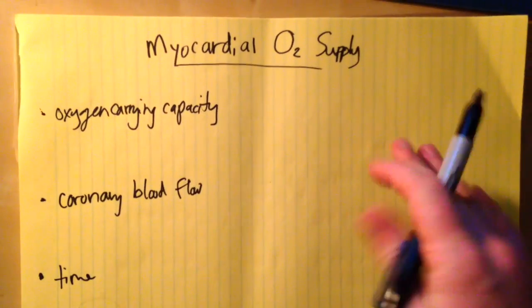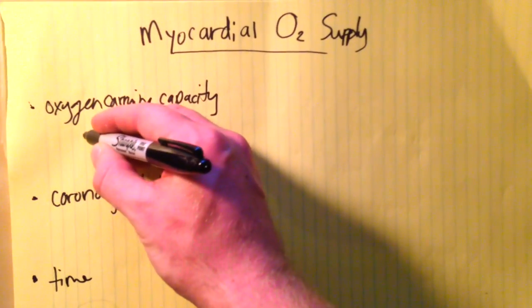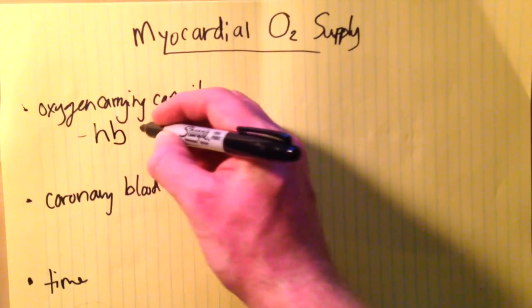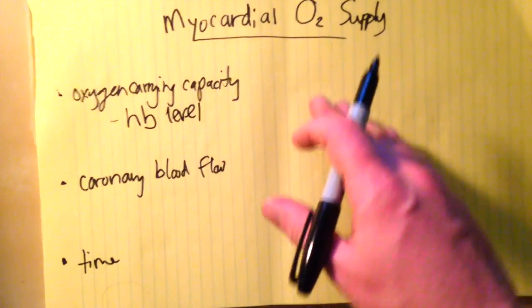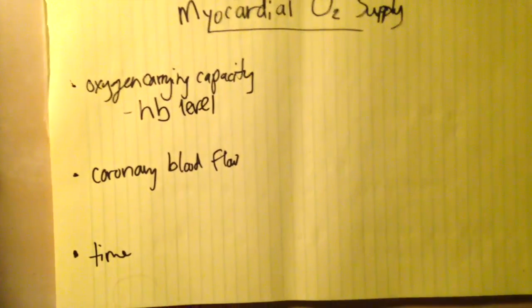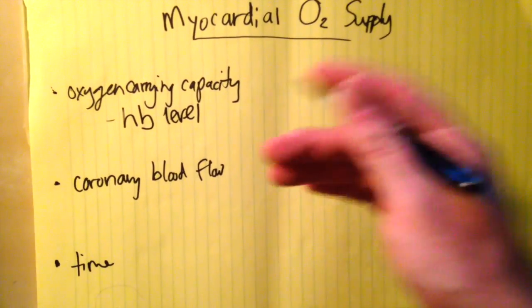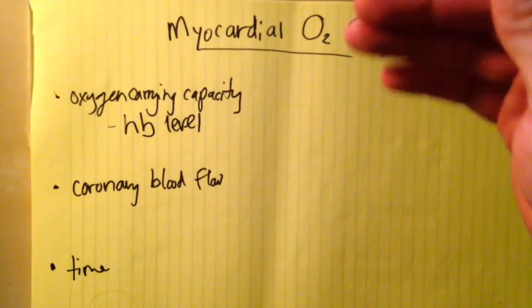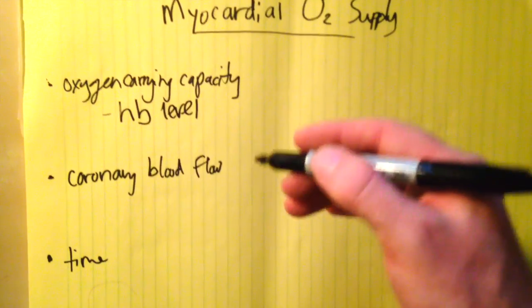The oxygen carrying capacity - the basics here is how much hemoglobin do you have? What is your hemoglobin level? If somebody's anemic, there's less hemoglobin to carry oxygen, less oxygen in the blood, lower oxygen carrying capacity, and the myocardium will see less oxygen delivered. That one's pretty simple to understand.